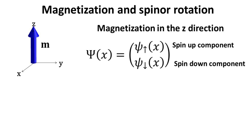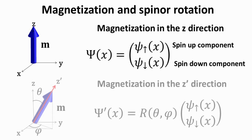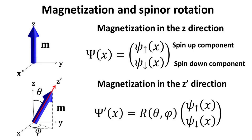Hence we define the spinor shown here. The first component corresponds to the wave function of spin-up electrons, while the second component corresponds to the wave function of spin-down electrons. It is important to emphasize that the spin-up and spin-down states are measured in relation to a spin quantization axis — here the z-axis — meaning spin-up electrons have spin pointing along the positive z-direction and spin-down electrons along the negative z-direction. If one wants to consider spin states along a different axis, one must apply a rotation operator to the spinor, as shown.